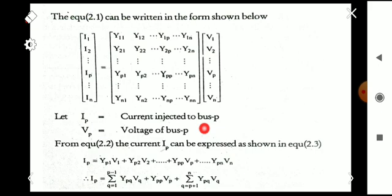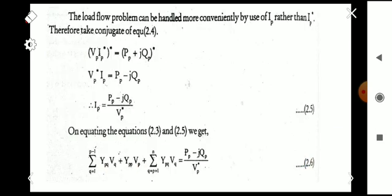We also consider the complex power. The complex power of bus p is Sp = Pp + jQp, where Pp is the real power and Qp is the reactive power. We have learned that Sp = Vp · Ip*, where Ip* is the conjugate of Ip. So Vp · Ip* = Pp + jQp. The load flow problem can be handled more conveniently using Ip rather than Ip*.